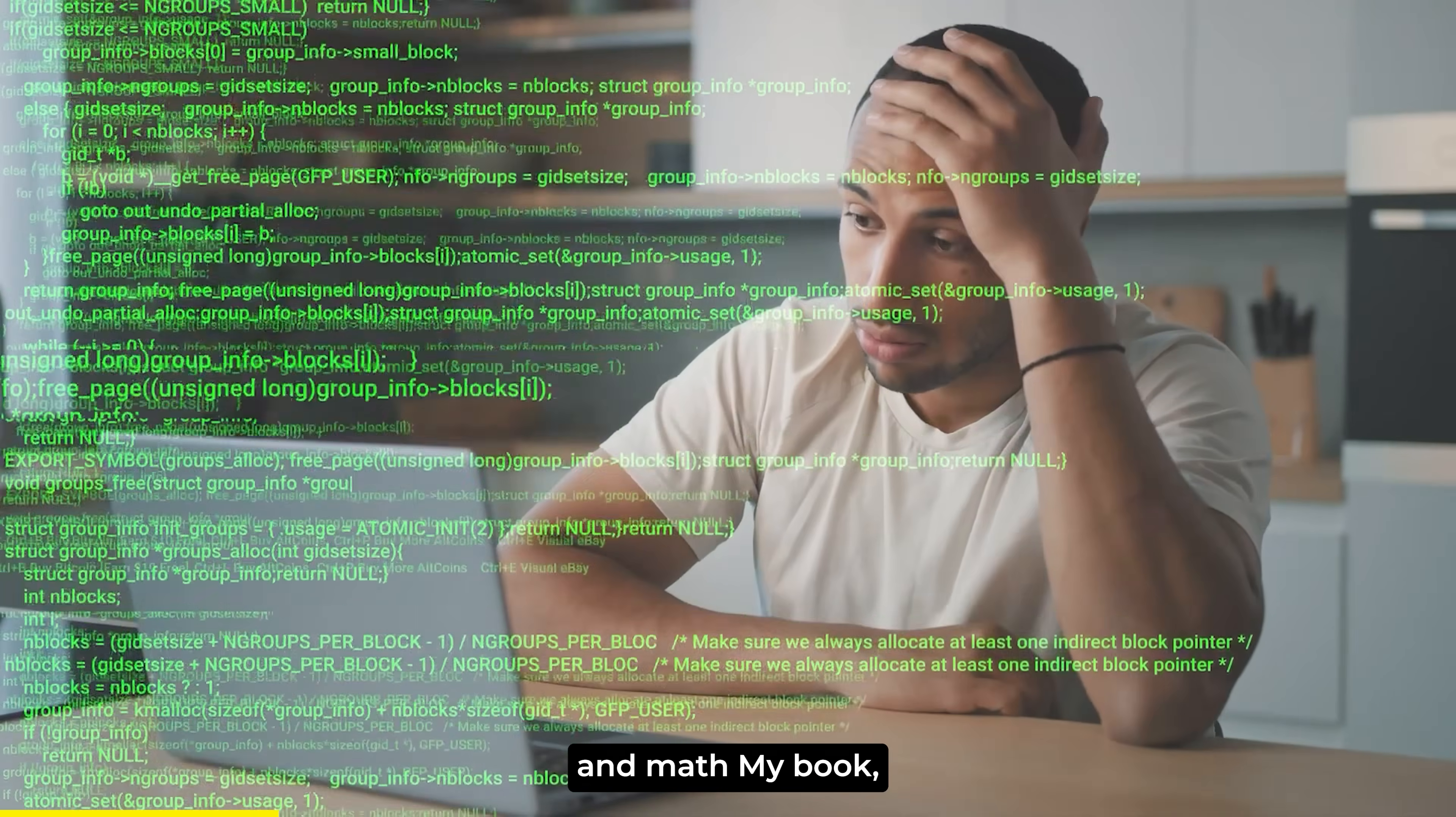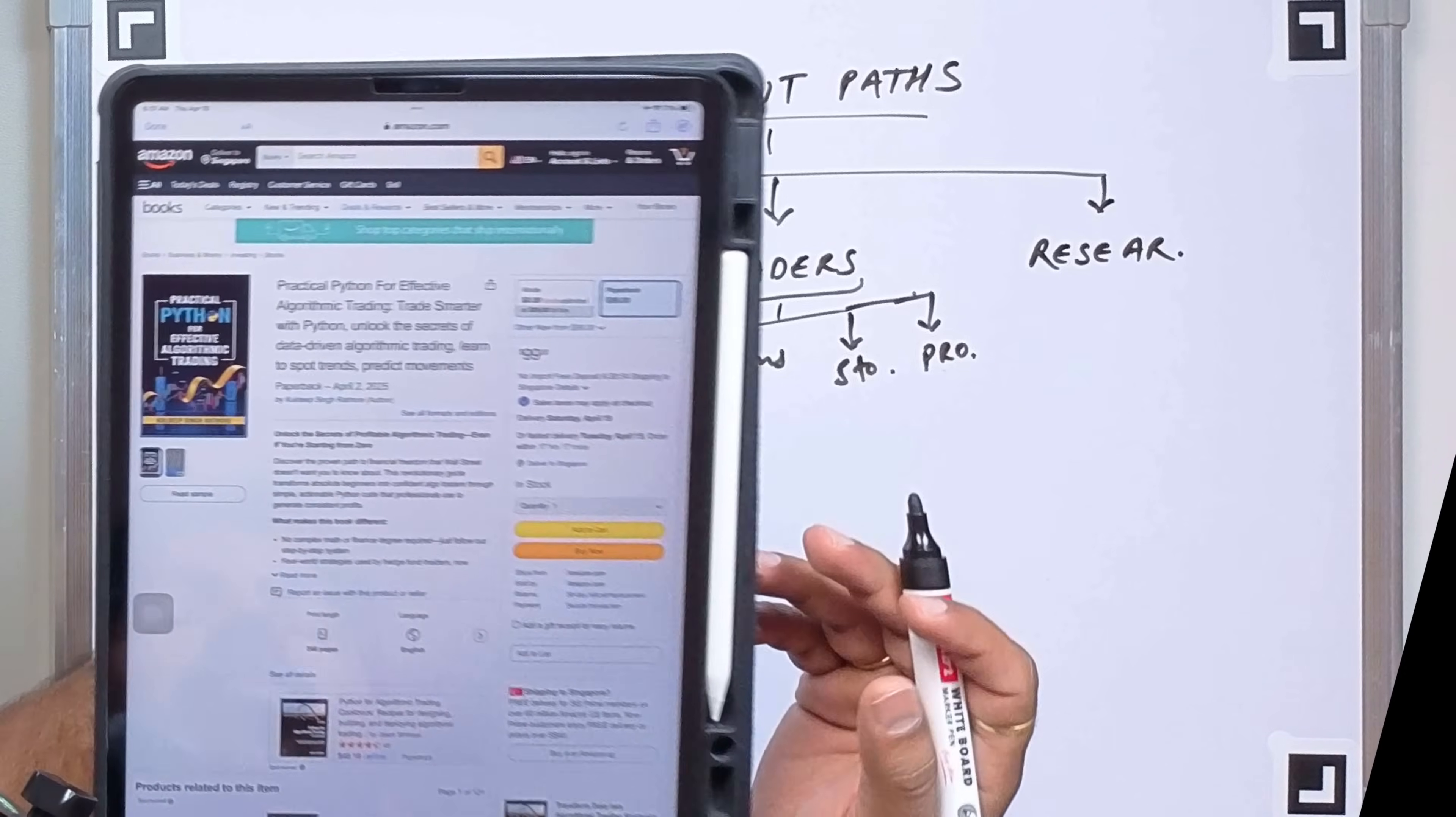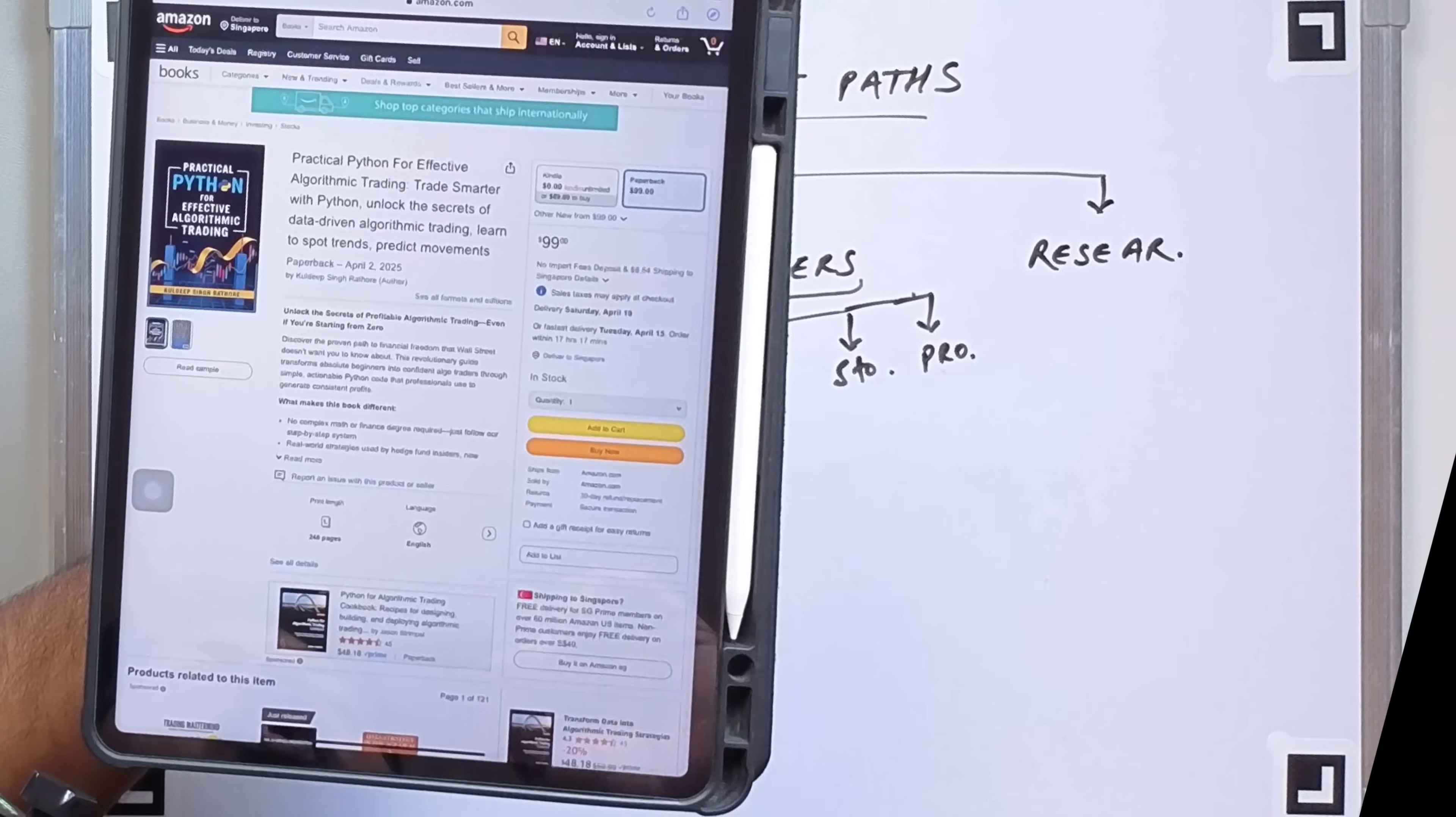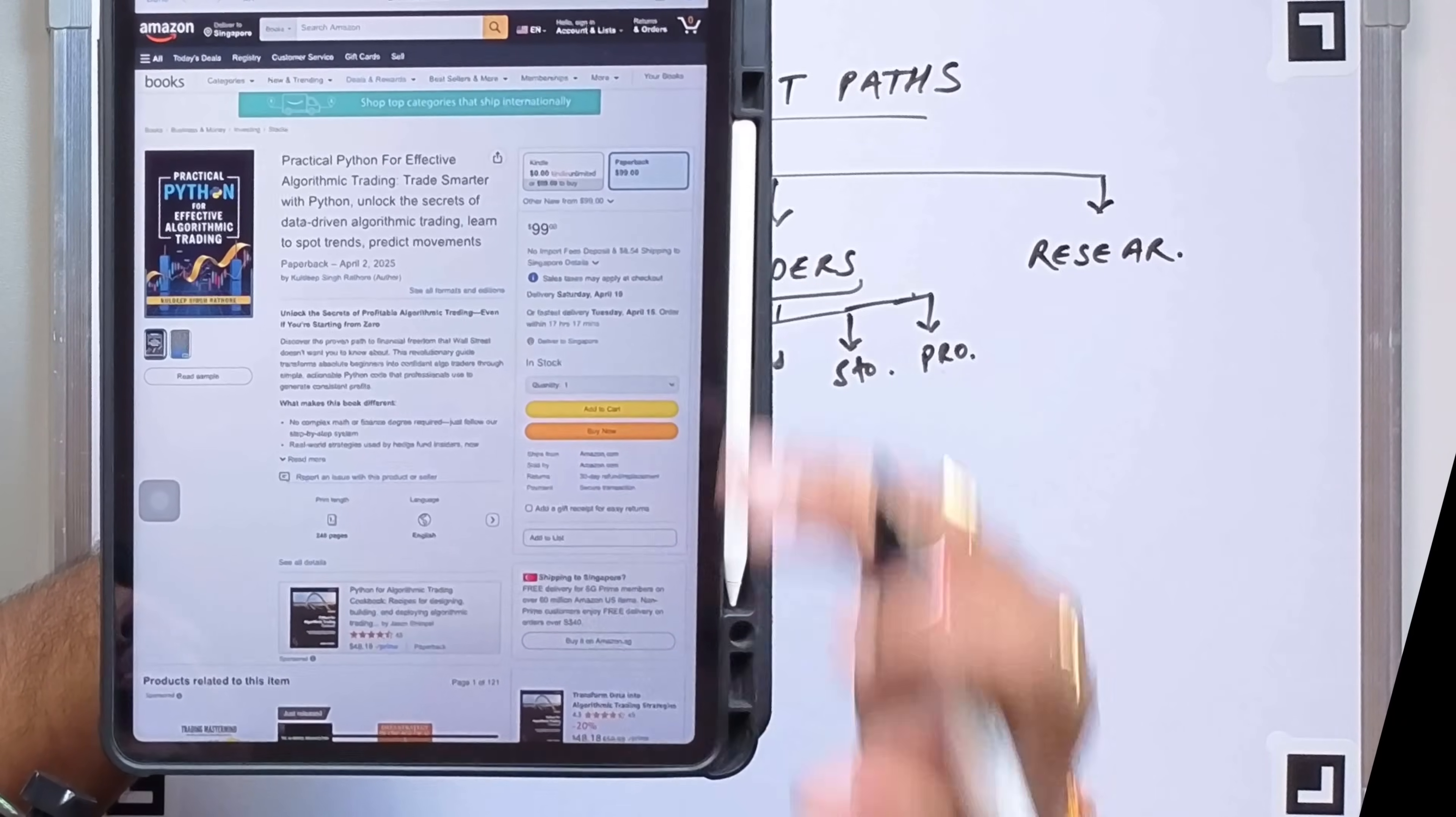Struggling to start with algorithmic trading? Feeling overwhelmed by complex code and math? My book, Practical Python for Effective Algorithmic Trading, changes everything. Written in plain English with step-by-step examples, it takes you from absolute beginner to building your first trading algorithms without the confusion. No prior experience needed. No complicated math. Just clear, actionable guidance that actually works. And if you want, you can also refer this awesome book. It is for absolute beginners. You can see this is Practical Python for Effective Algorithmic Trading. It's very basic and in each chapter we have two projects. So it will give you at least a starting beginner push.